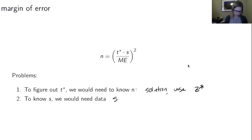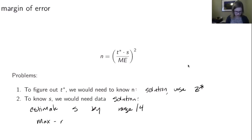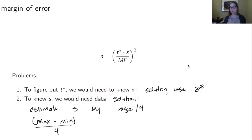There are several solutions for estimating s. My favorite is to estimate s by the range divided by 4 — that's the maximum minus the minimum, divided by 4. This is just a rule of thumb, but it works pretty well, and I'll show you in an example.